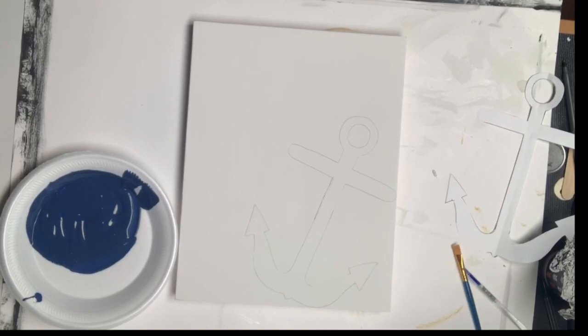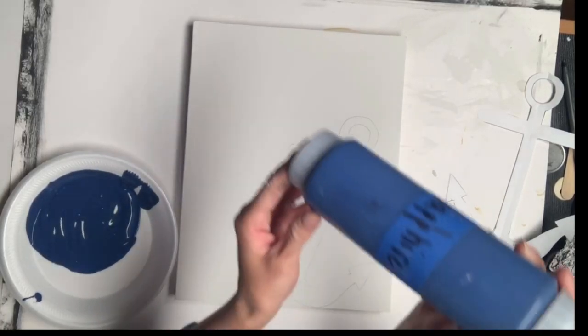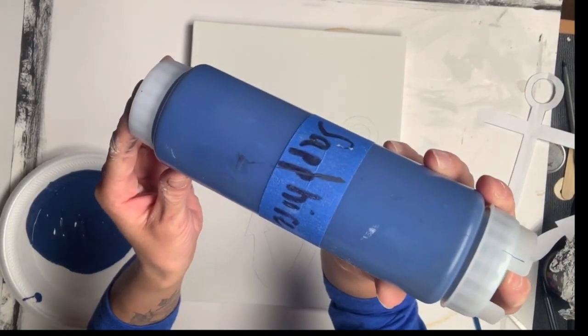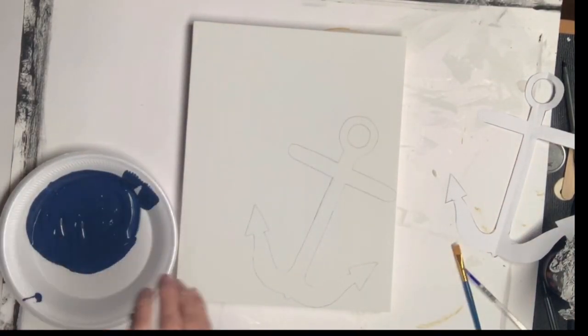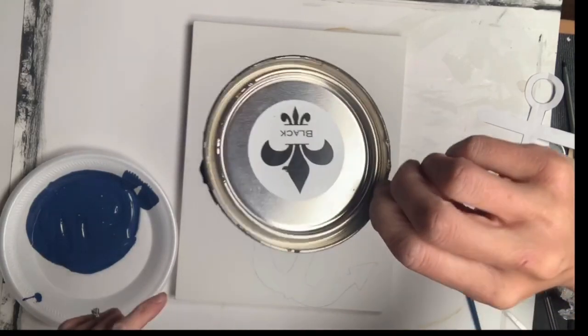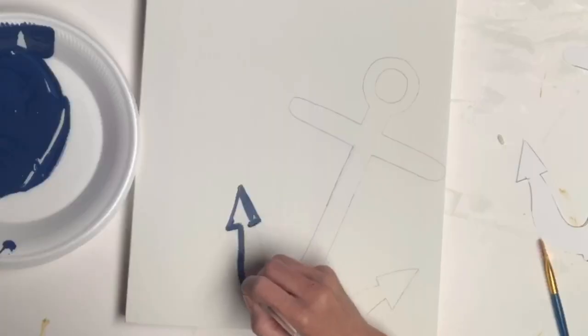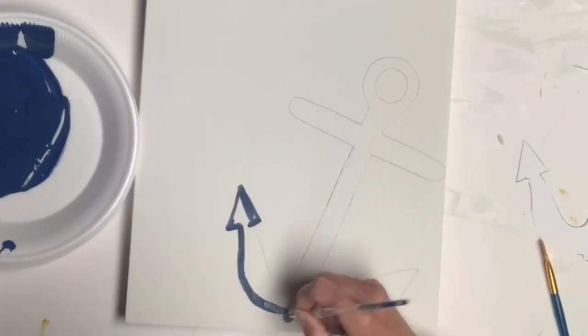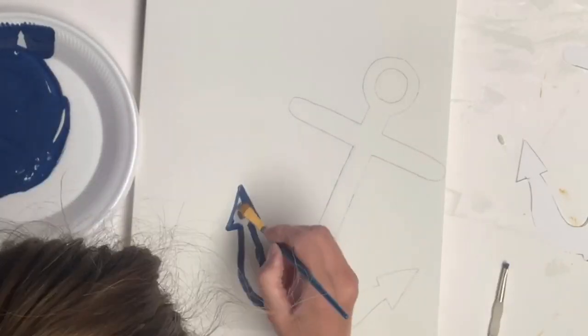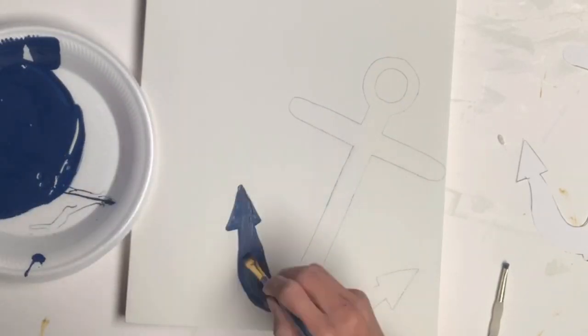I had taken Wise Owl chalk synthesis paint in the color sapphire and I took a little bit of black and mixed them together to get this blue. The sapphire is a little more vibrant and I wanted more of a nautical blue.